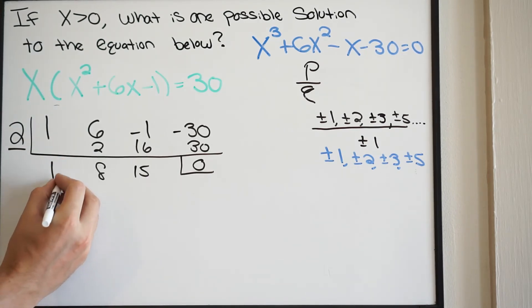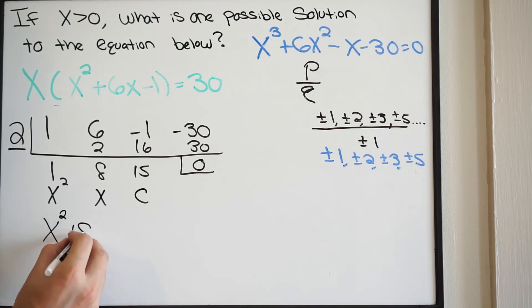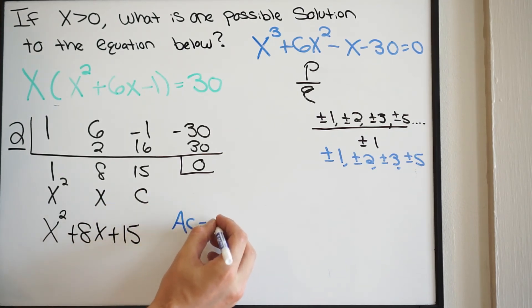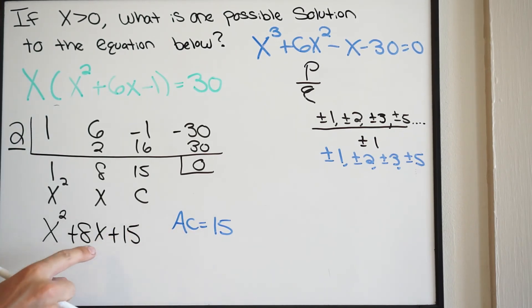This is now x squared, this is x, and this is our constant. So rewriting it, we have x squared plus 8x plus 15. And what we can do at this point is we can try to factor this using the AC method. So using the AC method, a times c, that's 1 times 15. That's going to give us 15.